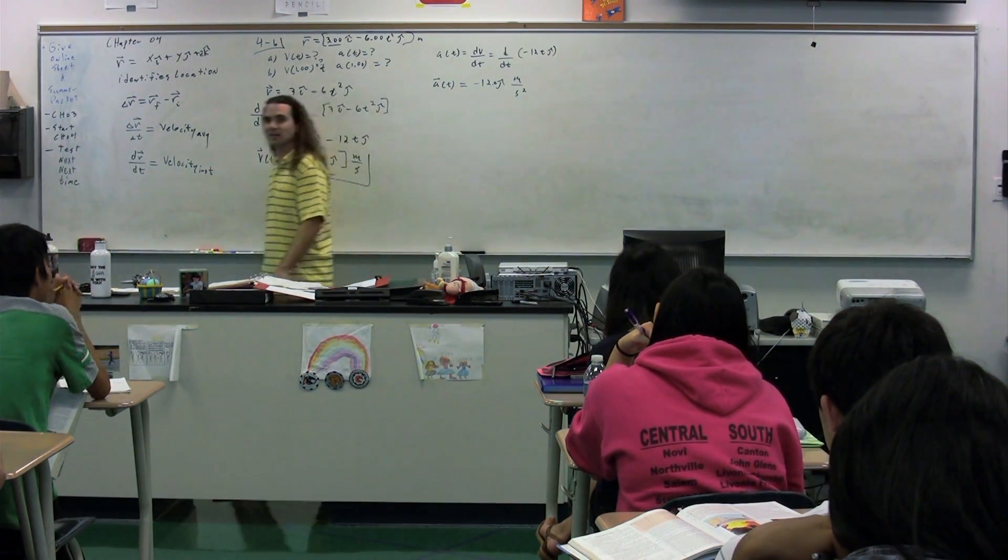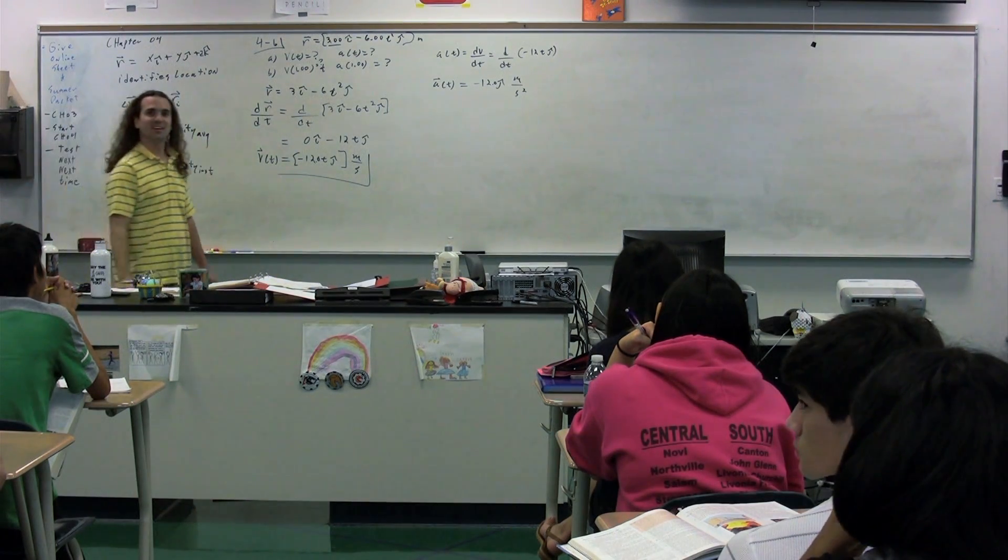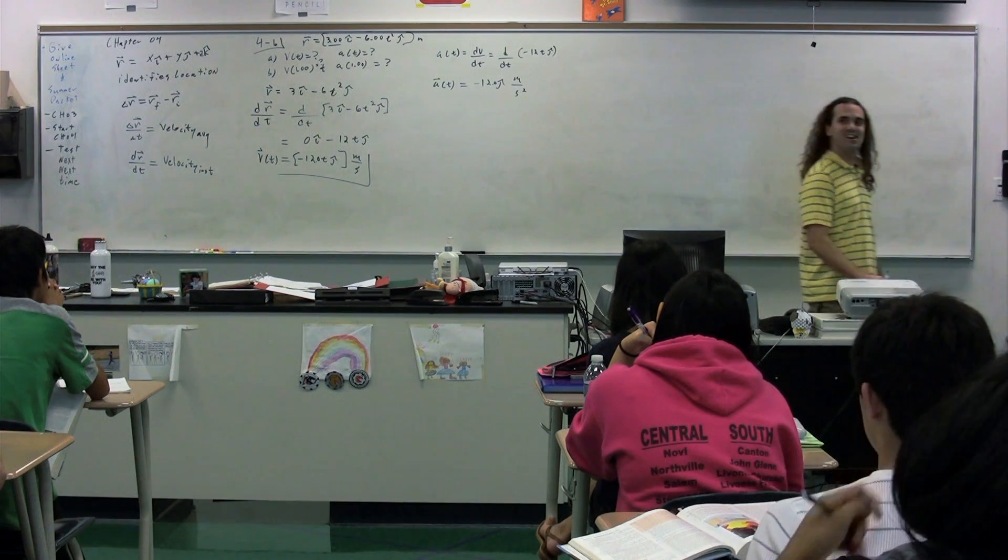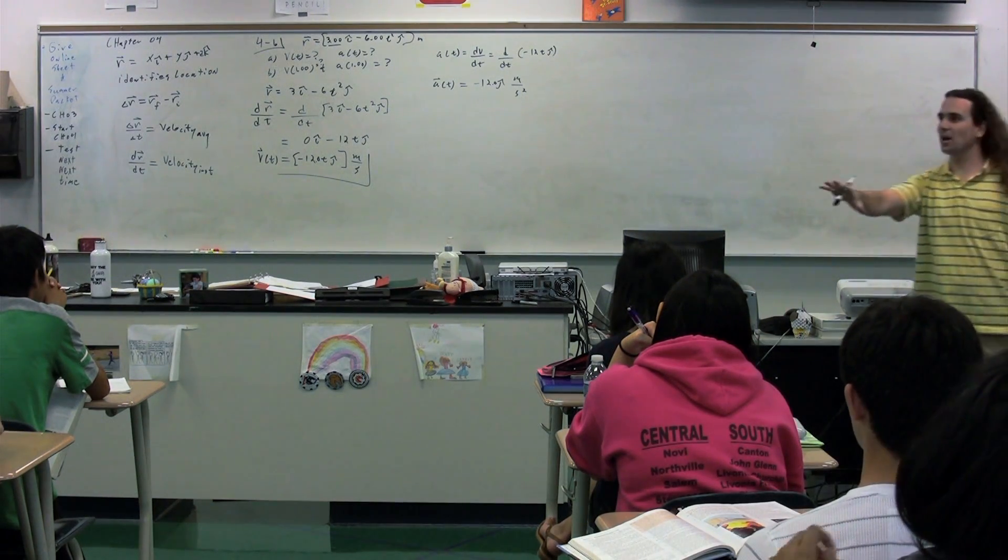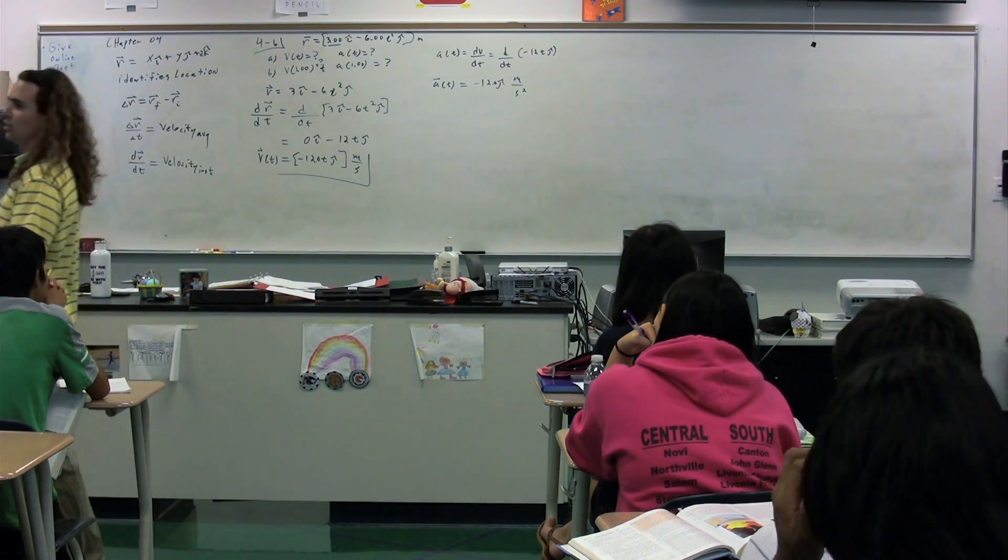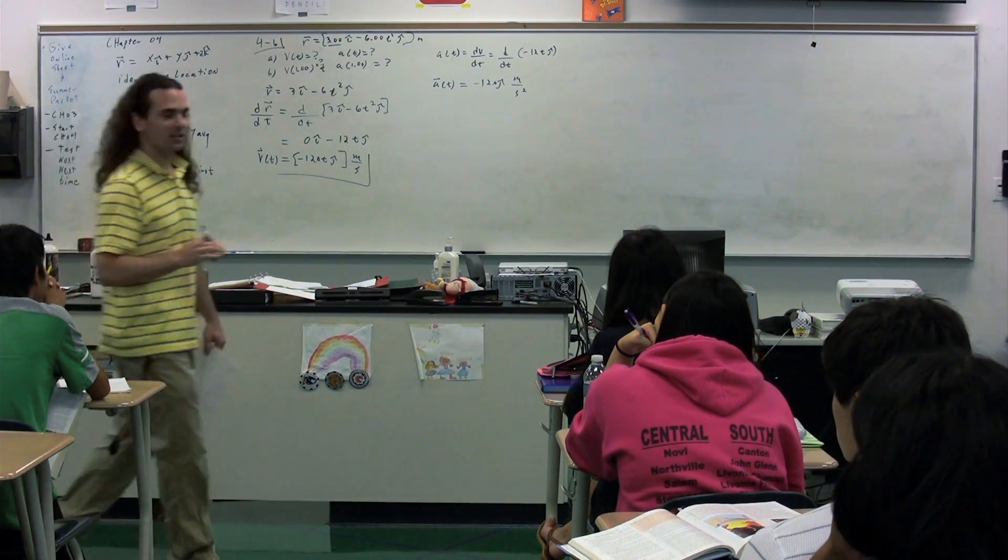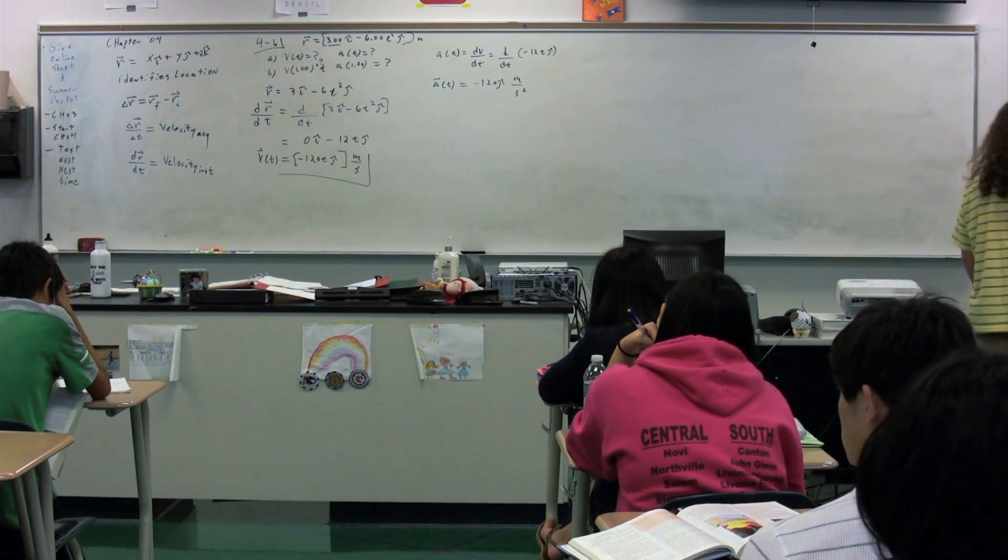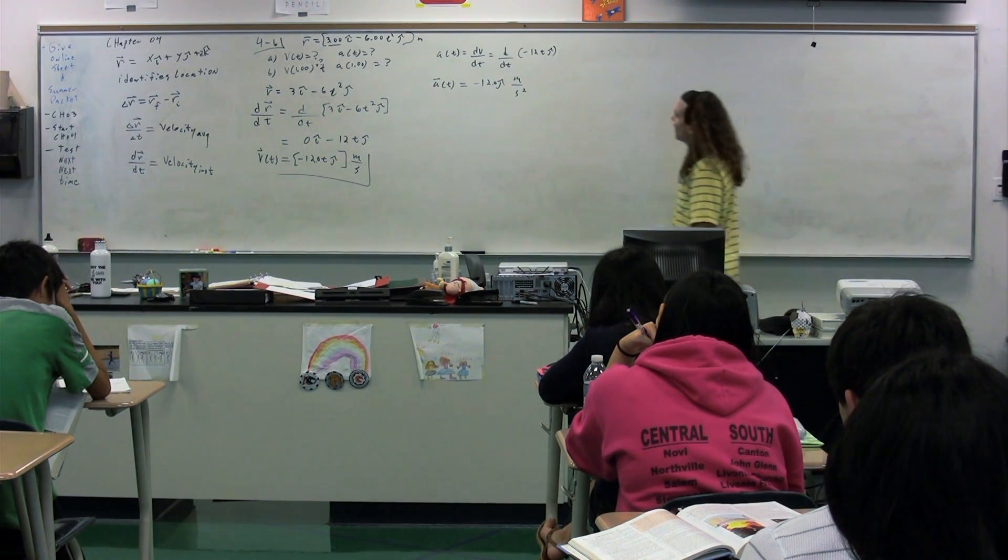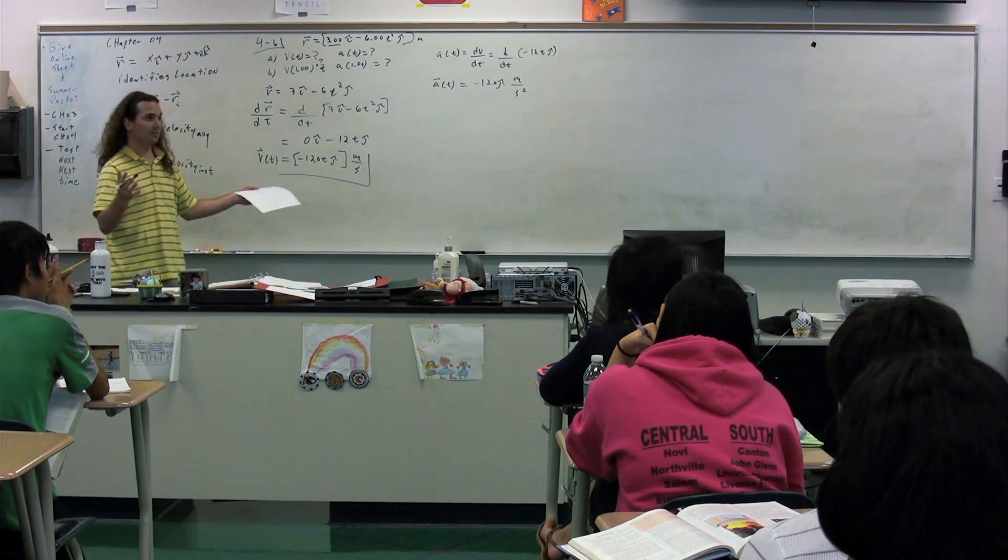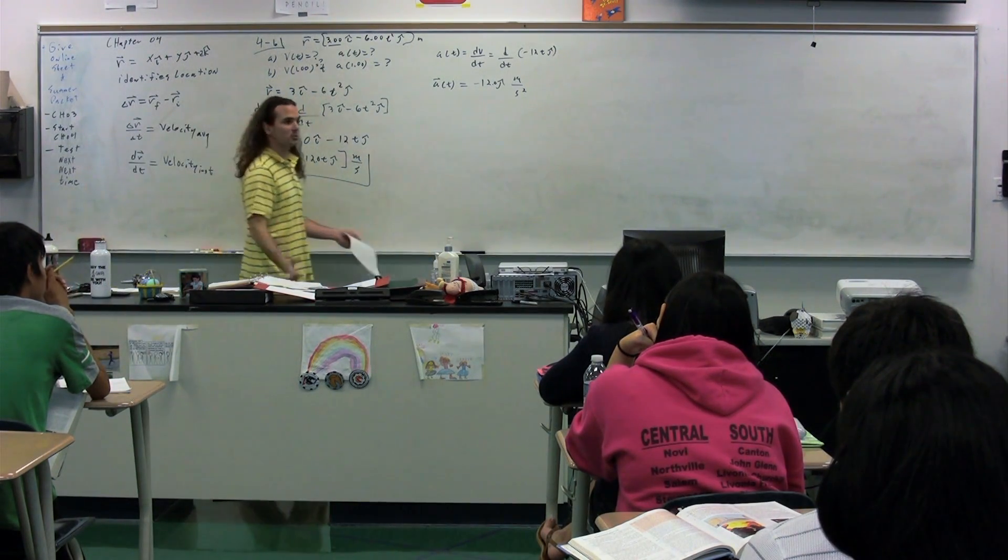What type of motion is this? UAM, uniformly accelerated motion. You know this because what, Stephanie? Because the acceleration is a constant. Because the acceleration is a constant. It's equal to a number. That number is negative 12j meters per second squared.